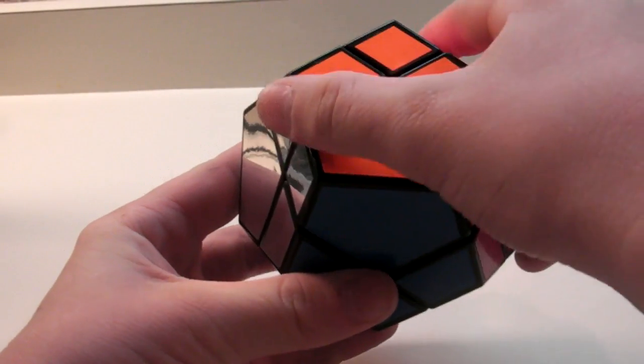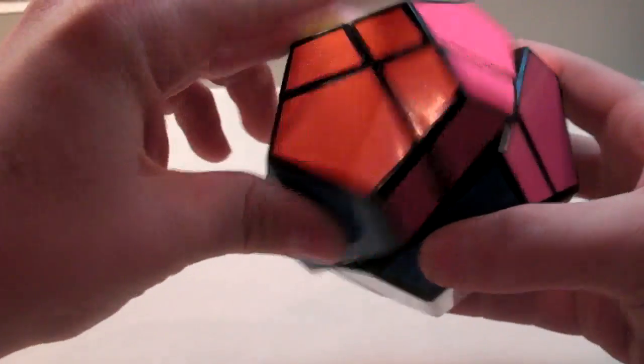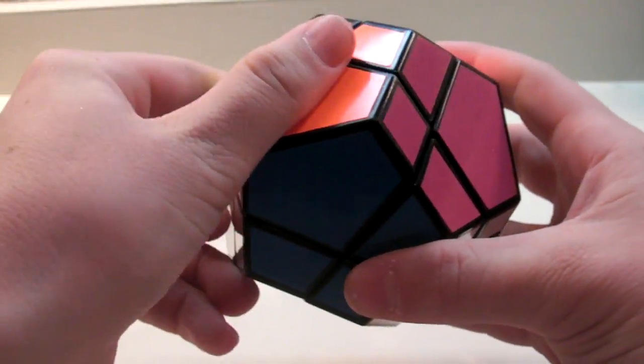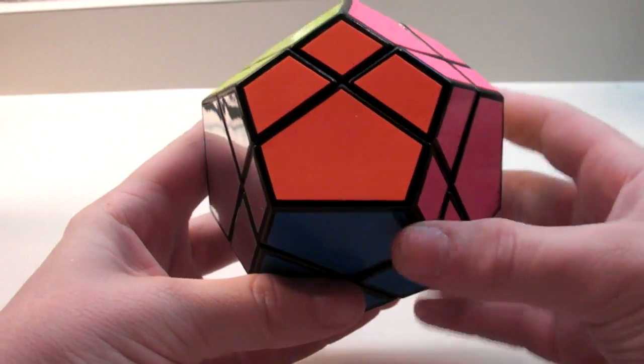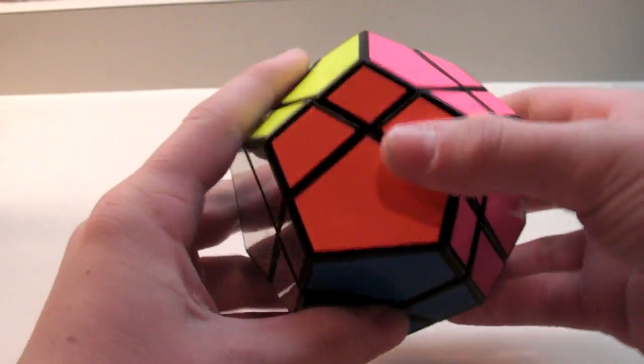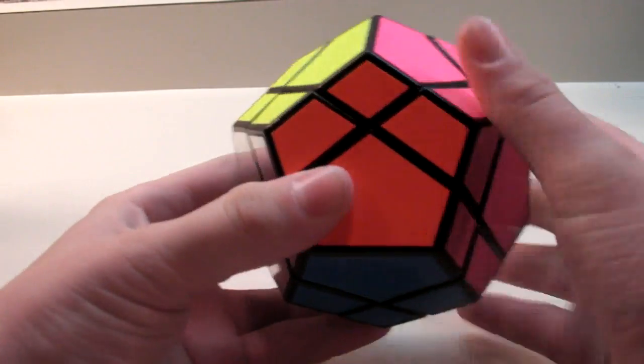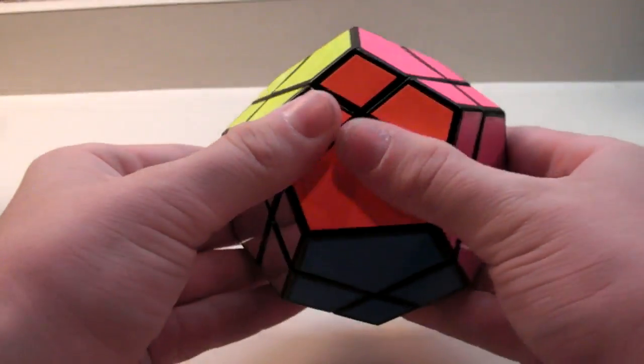Either way that you're holding this, you can either do an R prime and an R, L and L prime, and then those are the only two moves you really need to know. Because the other moves would be back and back right and back left, which don't really matter.